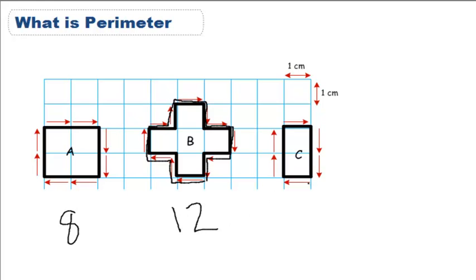And C is 1, 2, 3, 4, 5, 6. The distance all the way around C is 6.